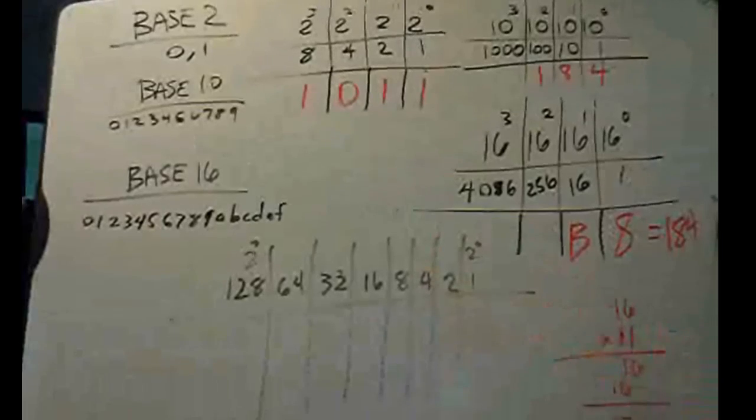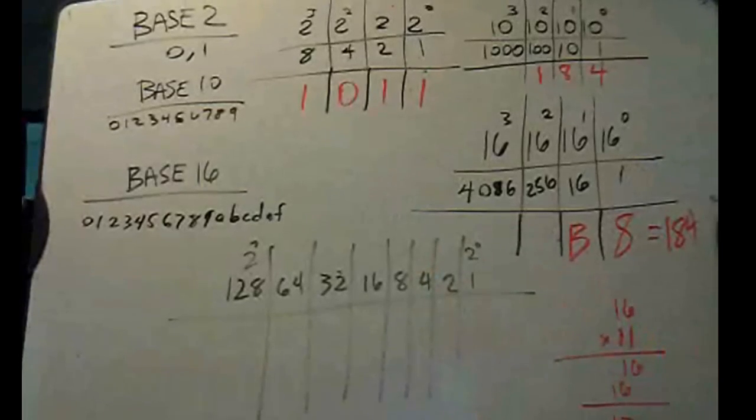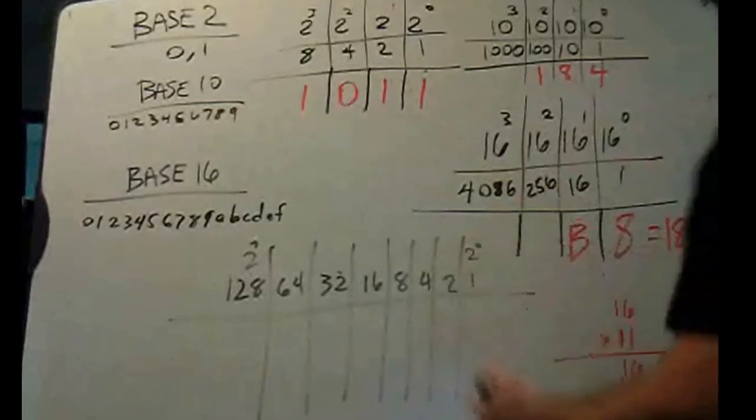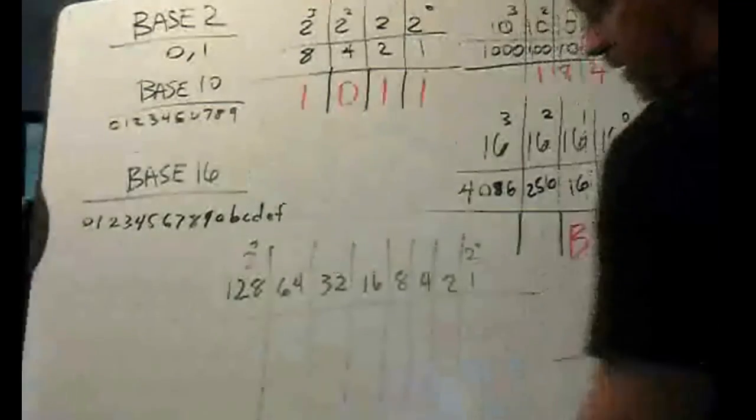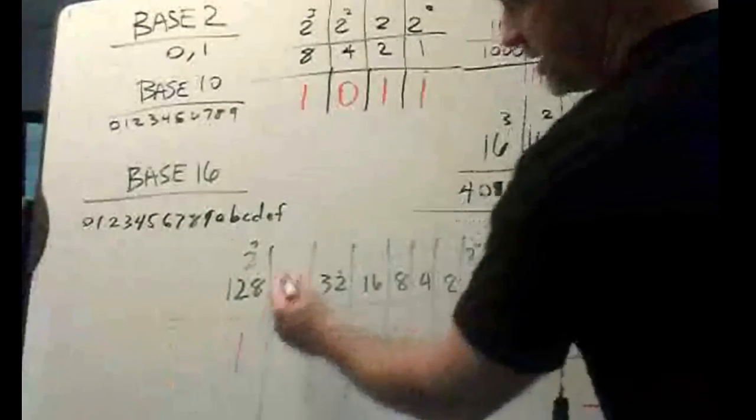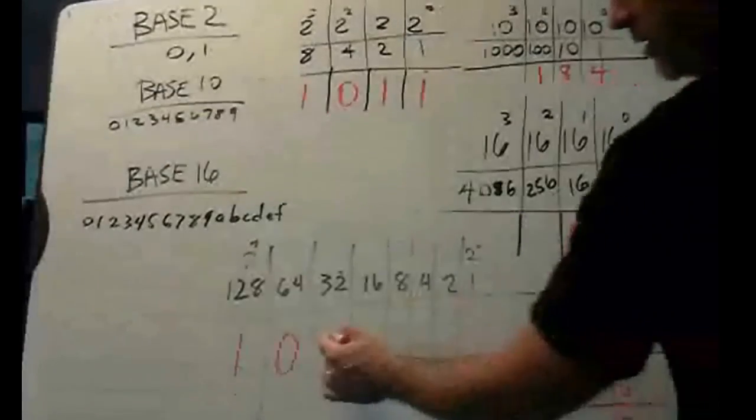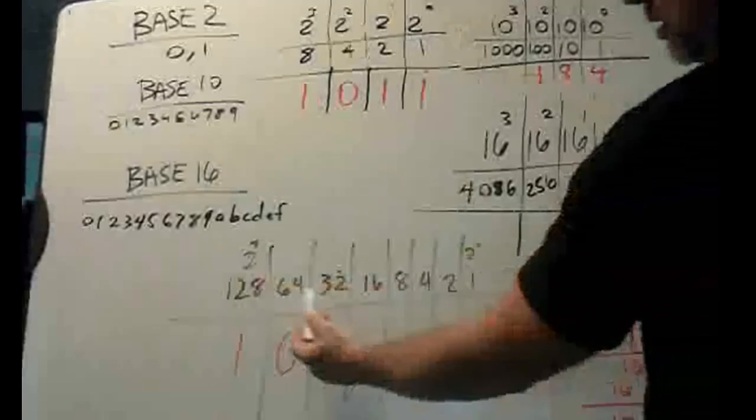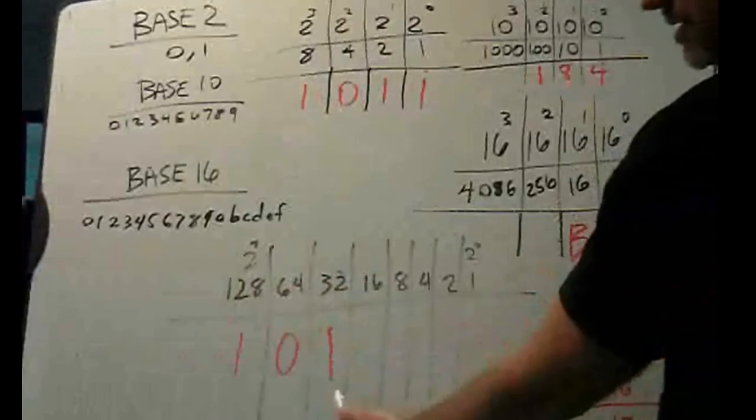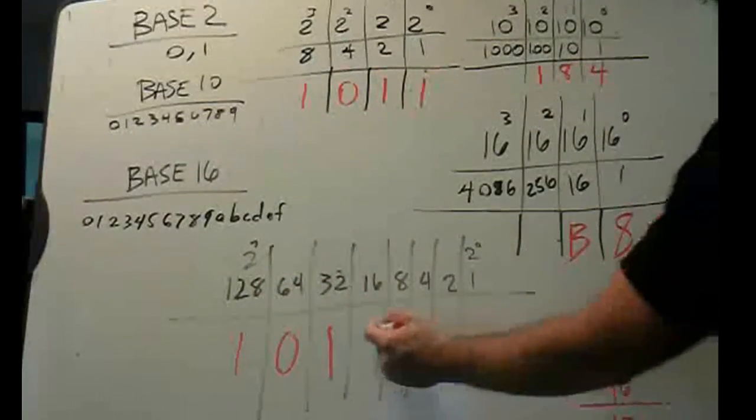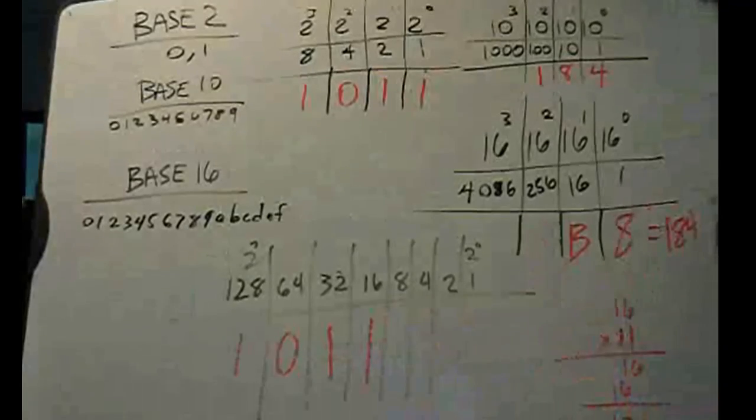So, in binary, if I want to write 184, how many 128's will I need? Well, I'll only need 1. How many 64's? 0. How many 32's? 1. Now, I have 128 plus 32 is 160. How many 16's? 1. There's 176.